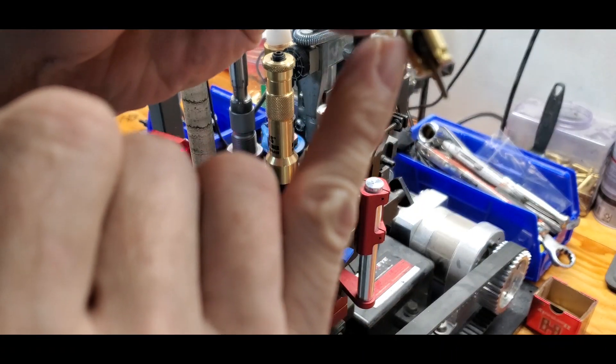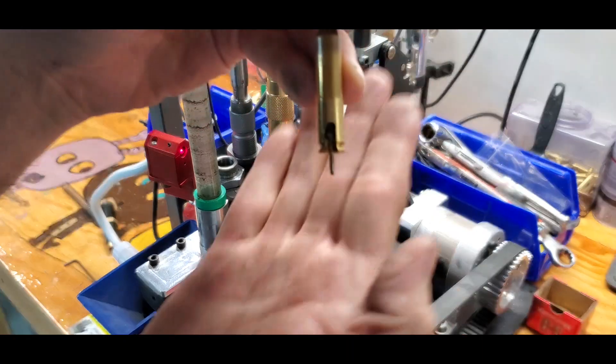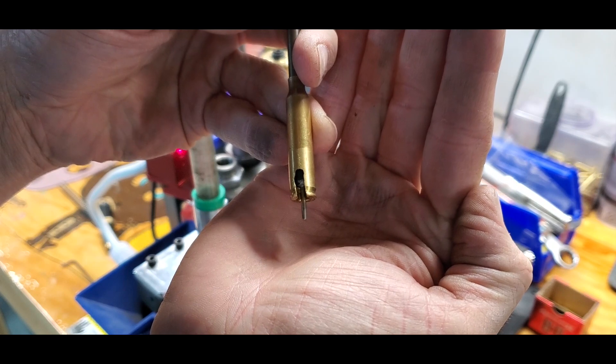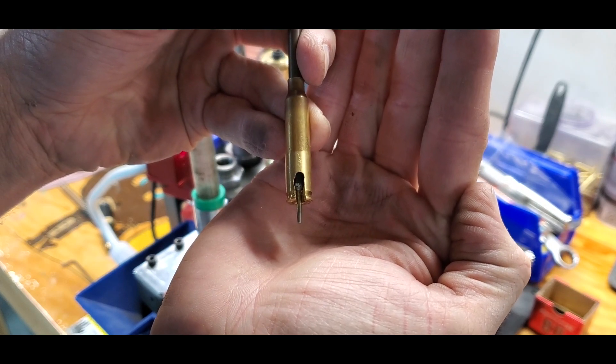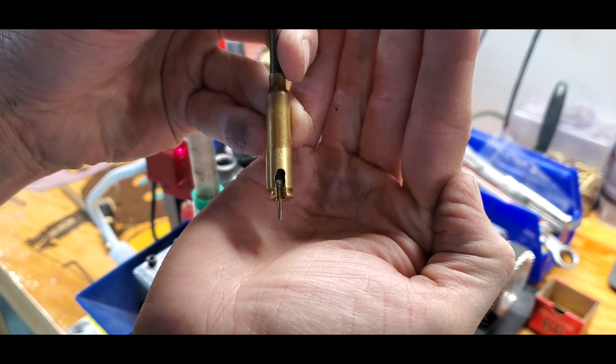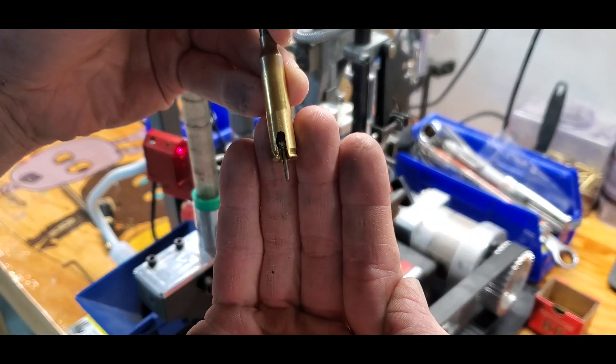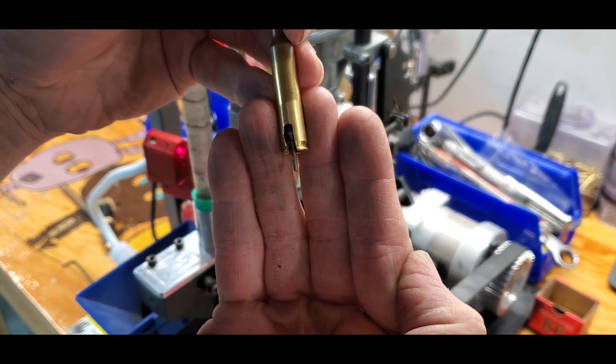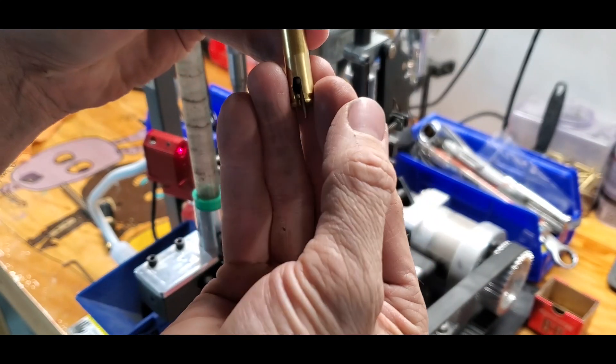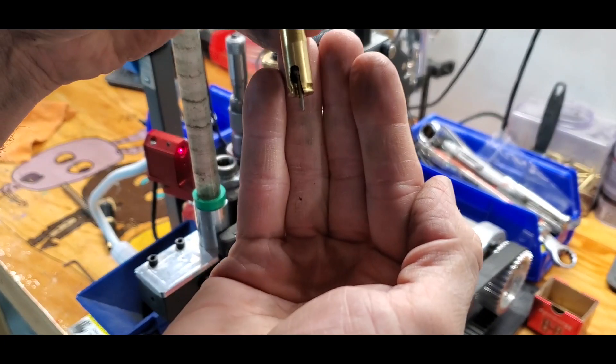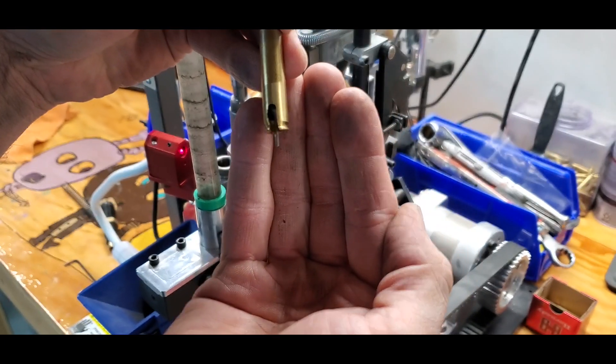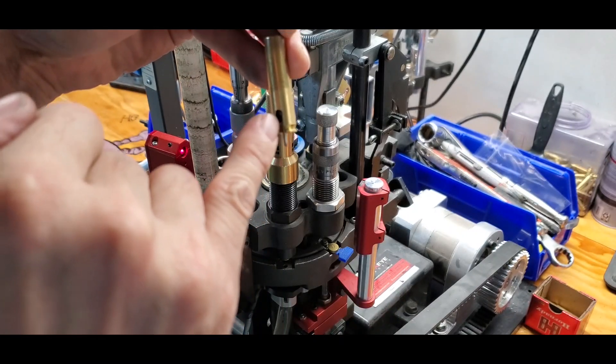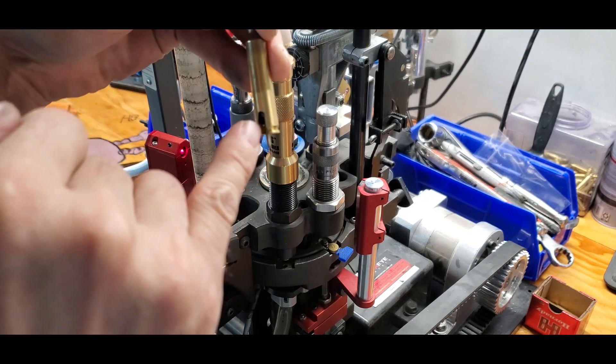That way I can make sure that this pin is not hitting on the inner web of the brass. You can see right there it's hitting. So you can see how far that pin's protruding. I'm going to have mine only protrude about that much. That way I'm ensuring that I'm not hitting the bottom of the brass.